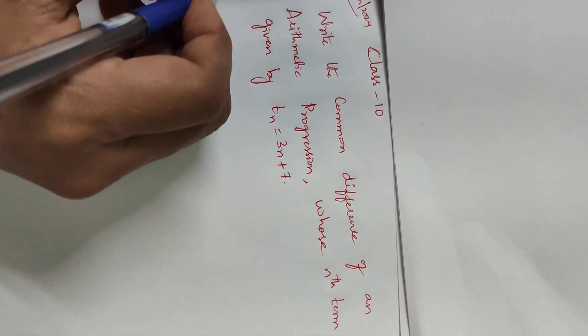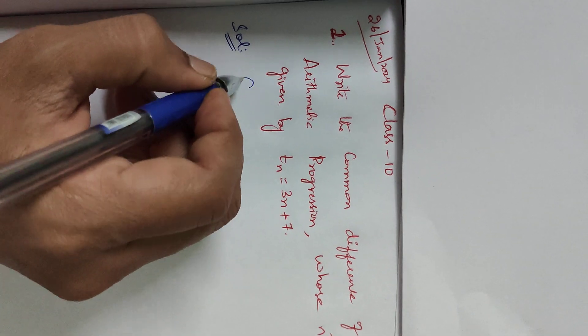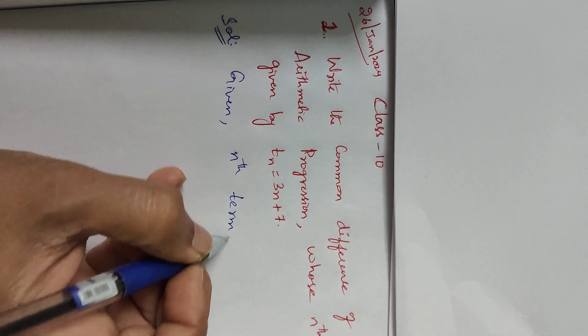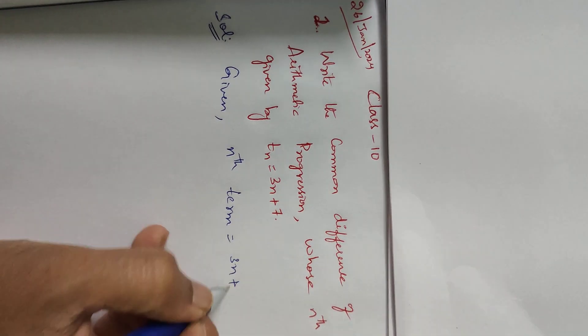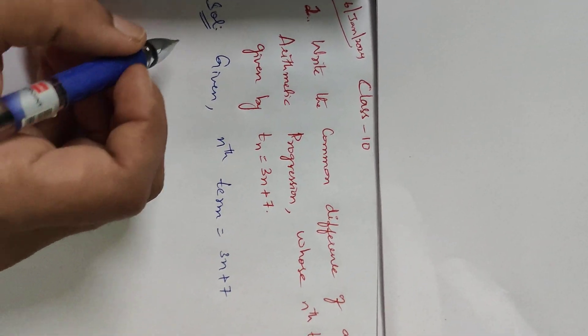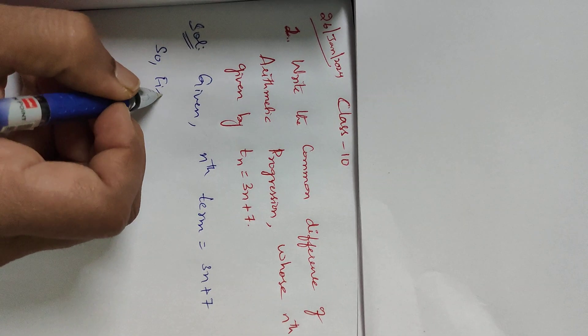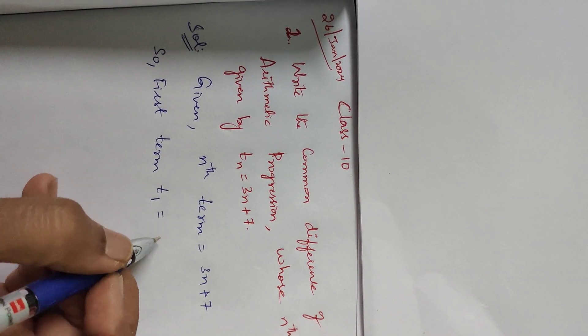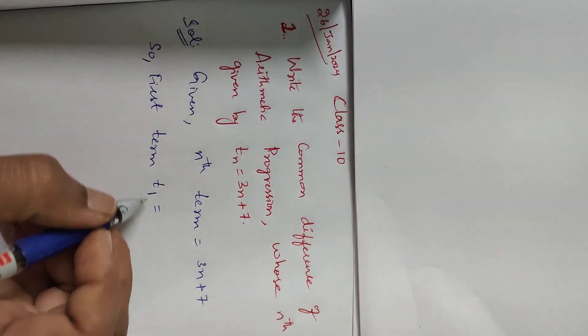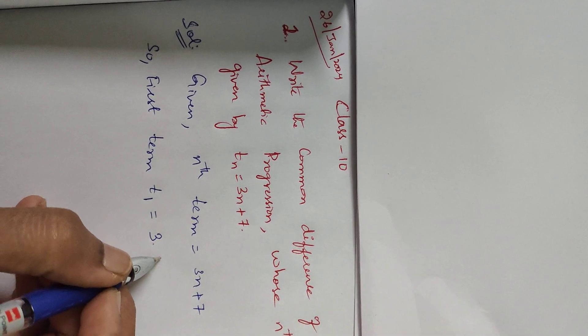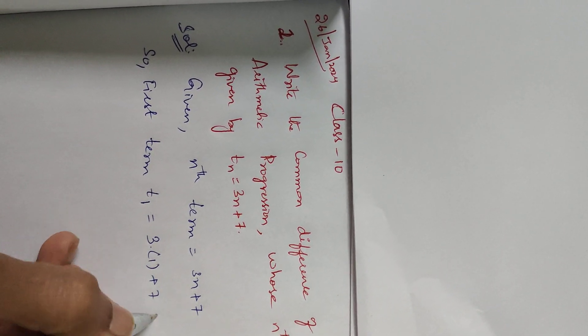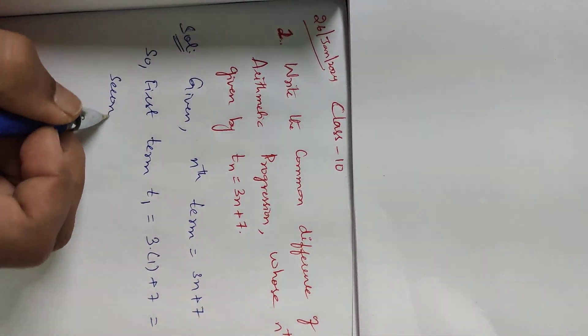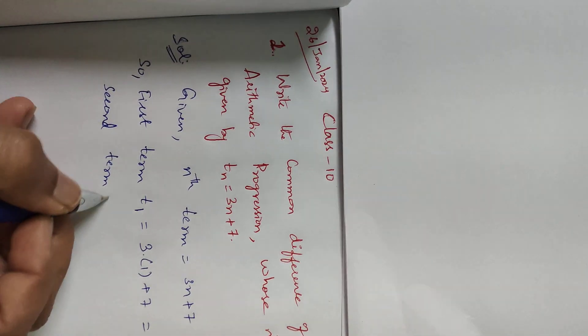Given the nth term is equal to 3n plus 7, let's find the first term. The first term is denoted as T_1. In place of n we substitute 1: T_1 equals 3 times 1 plus 7, which equals 3 plus 7 equals 10.